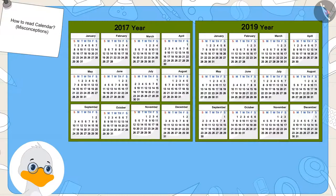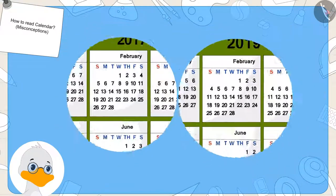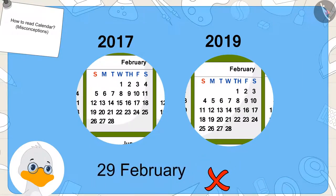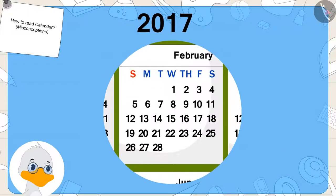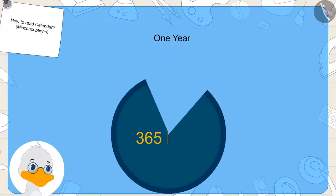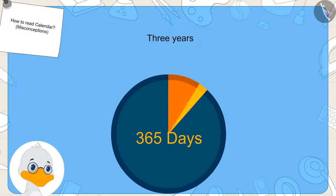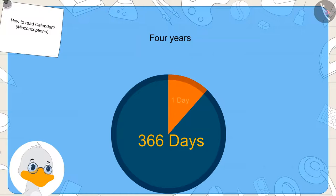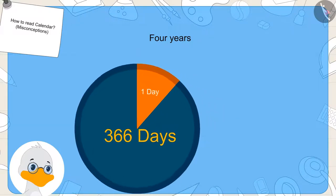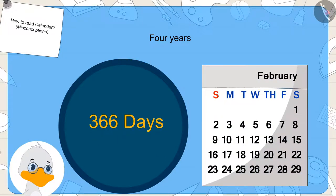Uncle explained to Raju and Bablu that every year the 29th February does not come in the month of February. There are only 28 days in February every year. But because exactly one year is not equal to 365 days — rather, it is a little more than that — these small parts that we could not count in days add up to one day in four years, which is added in the month of February.